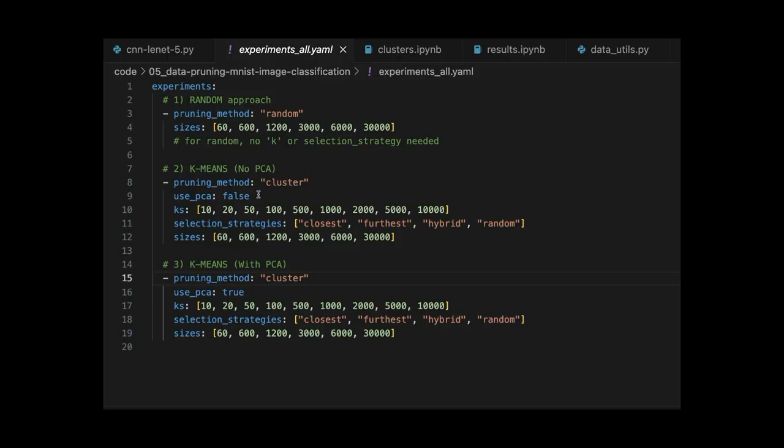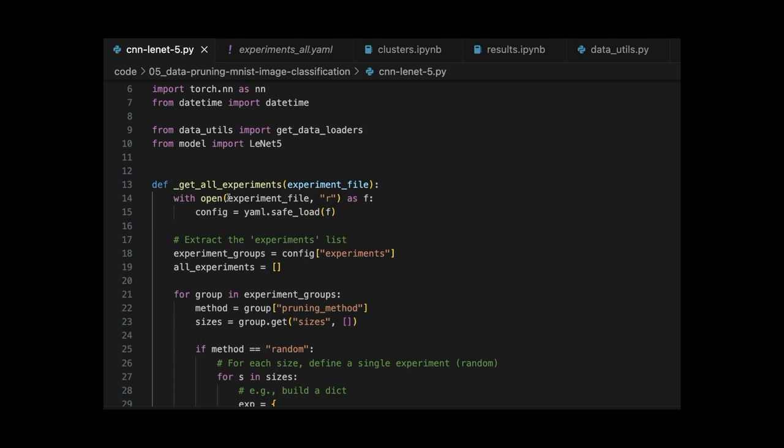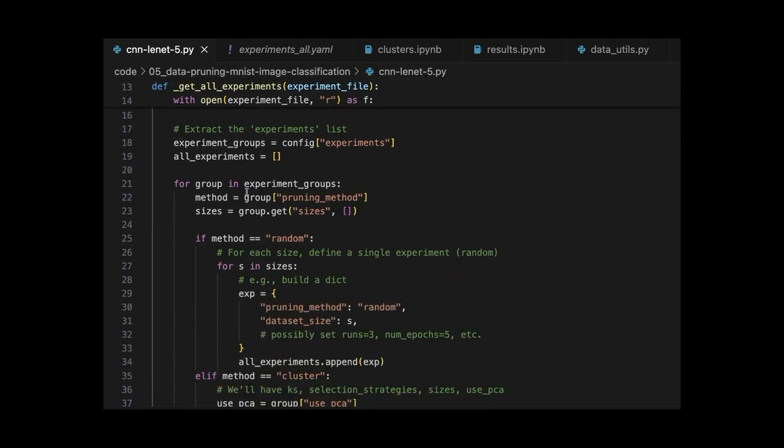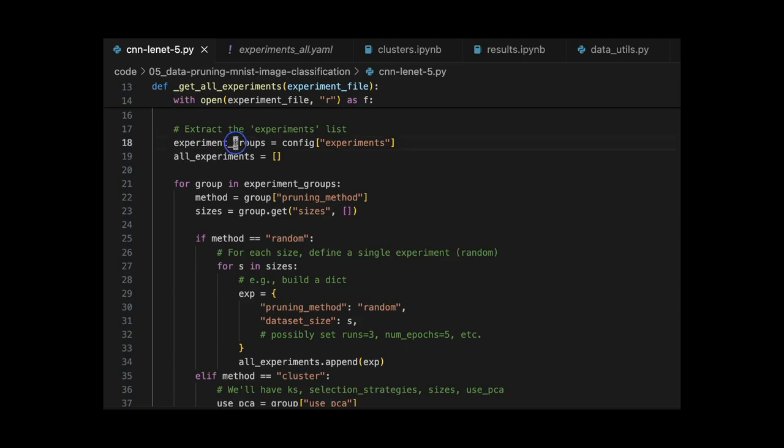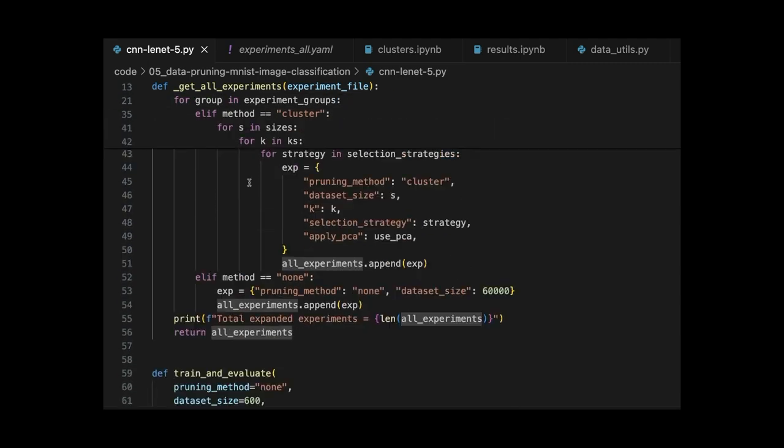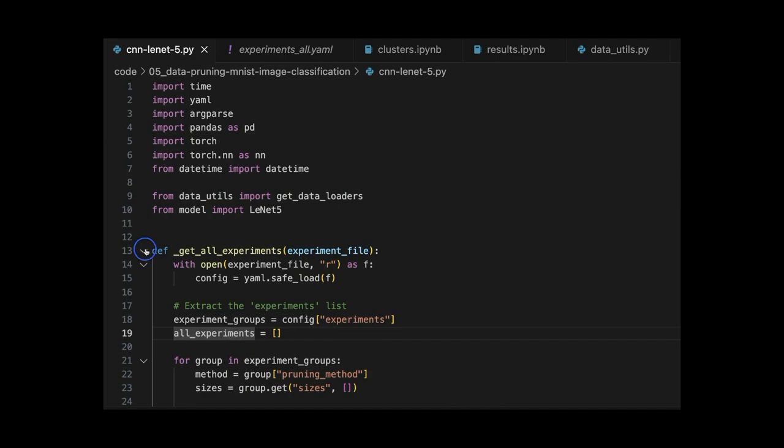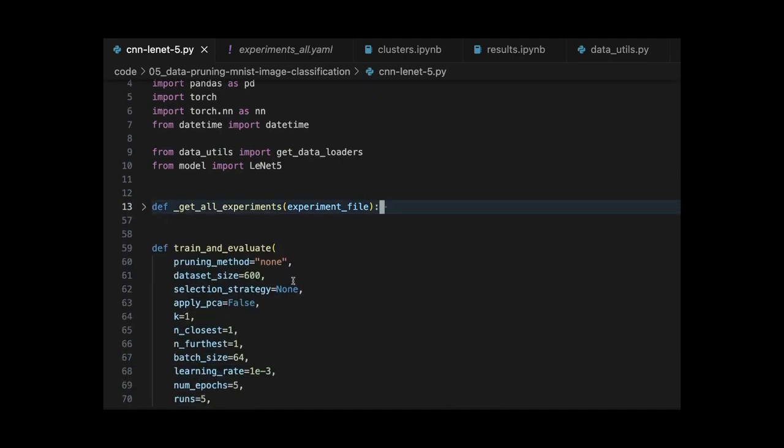And so to do this, I put configurations into a YAML file that tracked different parameters I wanted to test. I then created this little helper function to extract from there and create these little experiment dictionaries that we tracked. And we iterated through that, calling our train and evaluate loop over and over again.